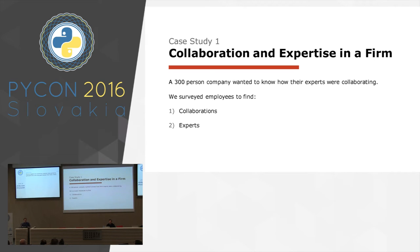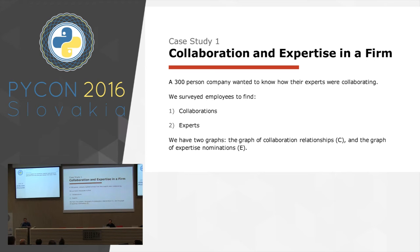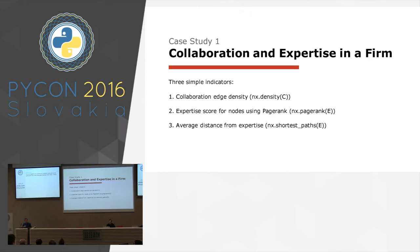For the rest of the talk, I'll present a few case studies about how I use these libraries. The first one is from my work as a consultant. It has to do with collaboration and expertise in a firm — a 300-person company wanted to know how their experts were collaborating and how expertise was distributed. We surveyed employees to find collaborations and expertise relationships. Note: you don't simply ask employees who the experts are or who they collaborate with — there's a significant amount of sociometry and psychology that goes into these survey questions.